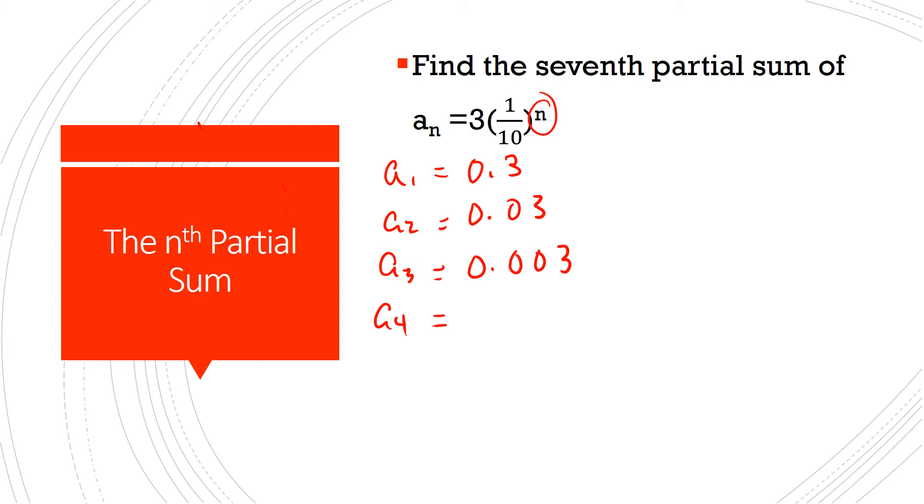a4, (1/10) to the fourth is 1 ten-thousandth. So we've got 3 ten-thousandths, so we've got 0.0003. Pattern kind of continuing, isn't it? a5, a5 is going to be 1 hundred-thousandth. So we've got 3 one-hundred-thousandths, or 0.00003, that's the tenth spot, that's the hundredth, that's the thousandth, that's the ten-thousandth, that's the hundred-thousandth spot.